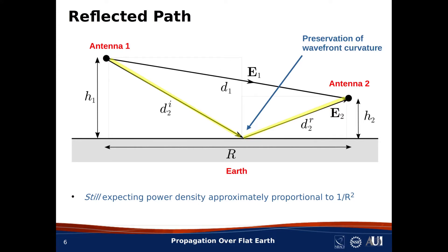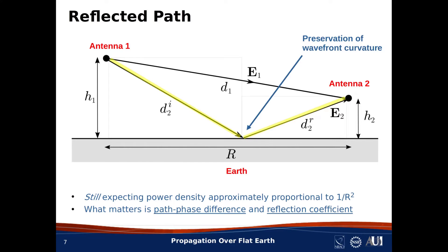Both the direct and reflected rays produce power density at Antenna 2 proportional to 1 over r squared — that does not seem surprising or interesting. What makes this problem interesting is that we are not merely adding power densities at Antenna 2. The quantities that add are the electric field intensities, and those electric field intensities have phase. What we get from Antenna 2 does not depend merely on the magnitudes of the electric field intensities; it also depends on the phases of these two fields. If the phase of E sub 2 happens to be 180 degrees different from the phase of E sub 1, then the signal could be potentially very small.